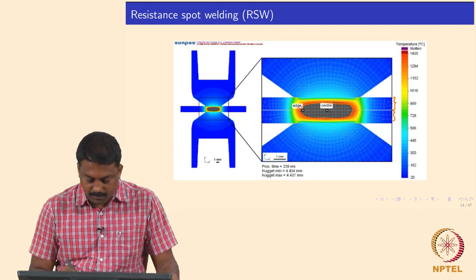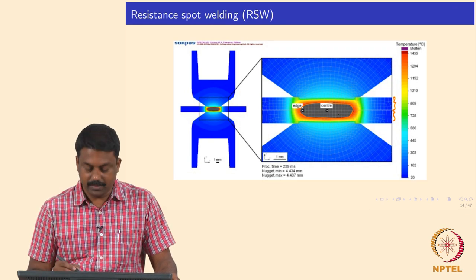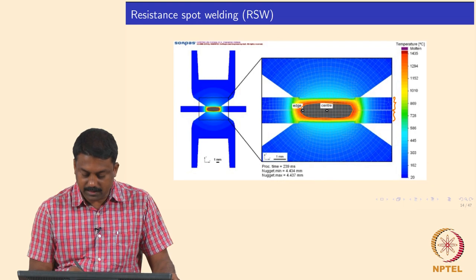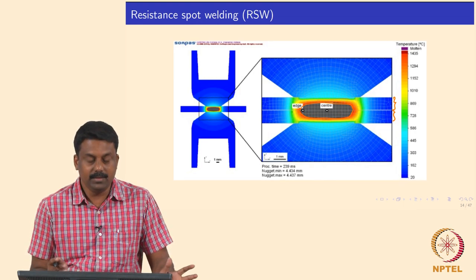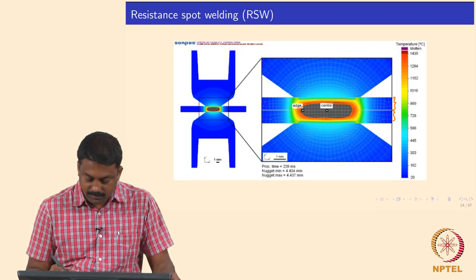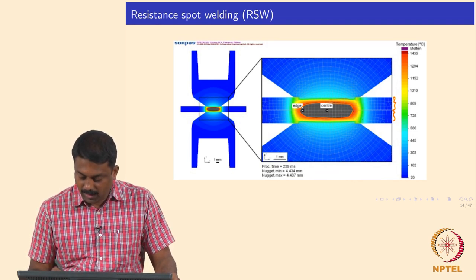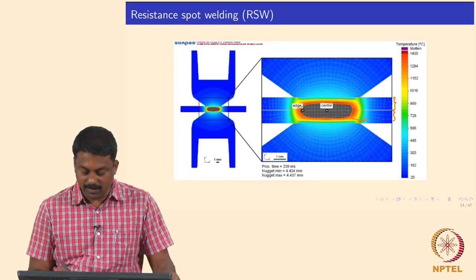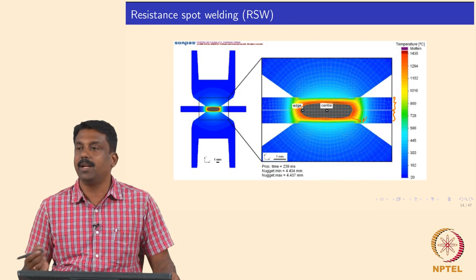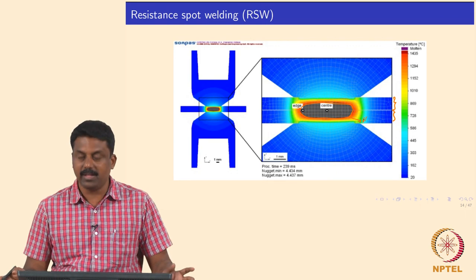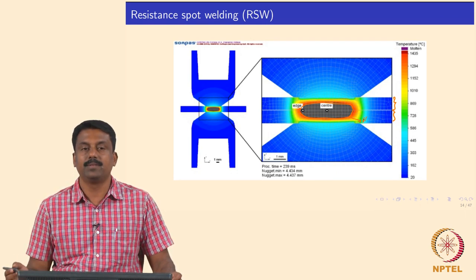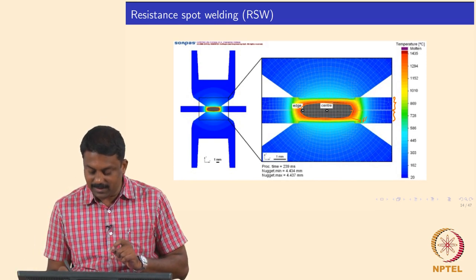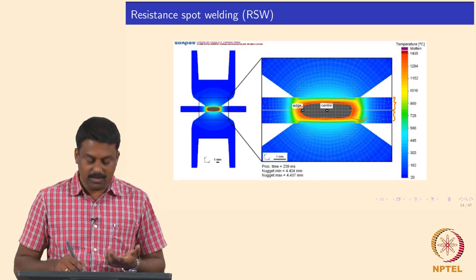The nugget we form generally has a particular shape. The fusion boundary can extend to the surface of the plate — so then you will have splashing. If you look at the temperature distribution, you already reach close to room temperature somewhere about 1 mm from the fusion boundary. From say 1400°C you reach room temperature within 1 mm distance. The temperature gradient is extremely high, and due to that you minimize the heat affected zone significantly.